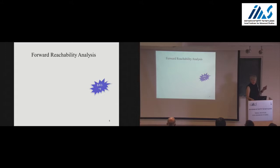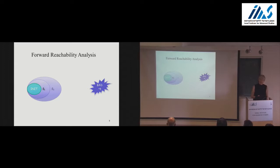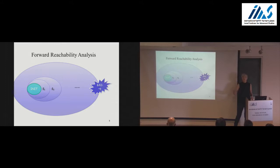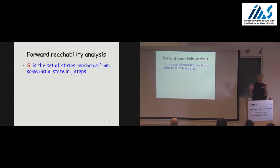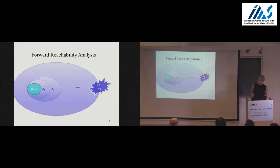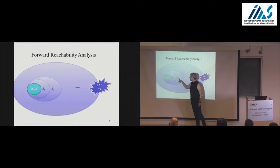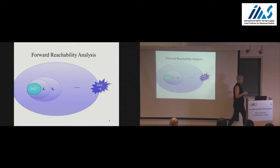Here is the forward reachability analysis. We have the bad states, and we start with the initial state. We take the successors S1, then the successors of successors S2, and so on. The question is whether we will eventually hit this set of bad states — meaning we have a bug — or we are not going to hit them, meaning we are safe. Sj is defined as the set of states reachable from some initial state after exactly j steps.